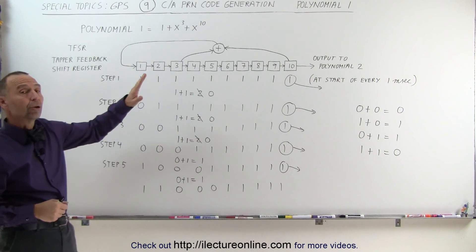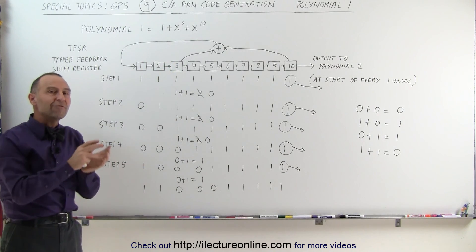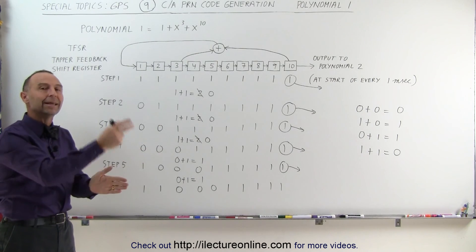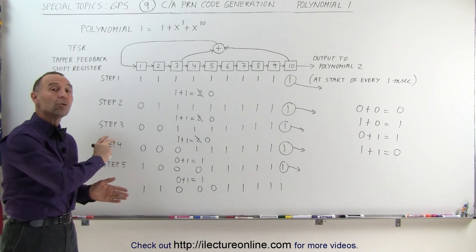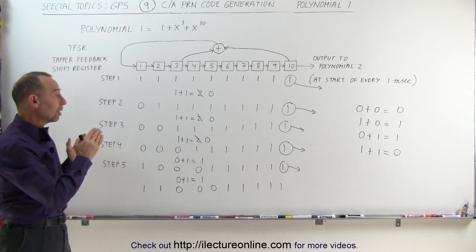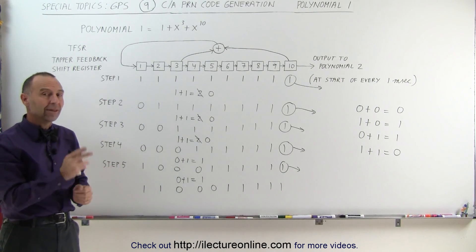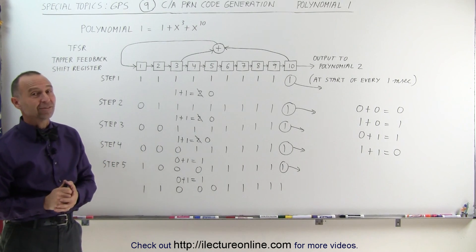Again, this first part of polynomial 1 process only feeds polynomial 2. It doesn't actually put the real code out yet. That gets done in the next polynomial process. So in the next video, we'll then take a look at polynomial 2 and see how it processes the bits there in order to put out that PRN code. And that's how it's done.